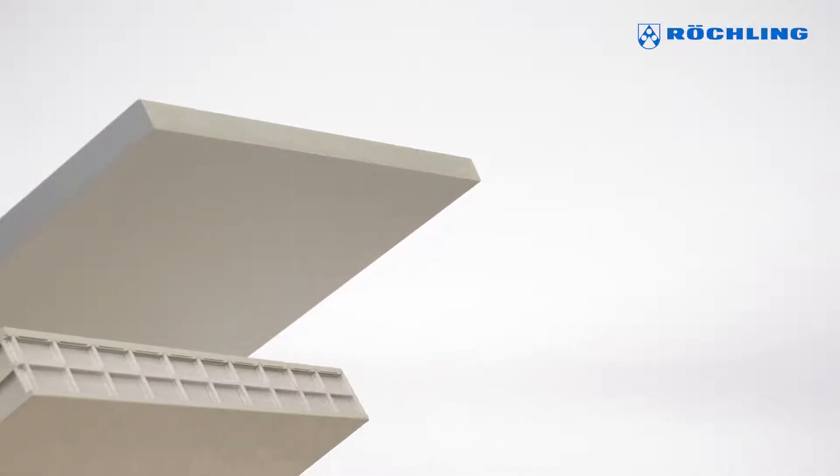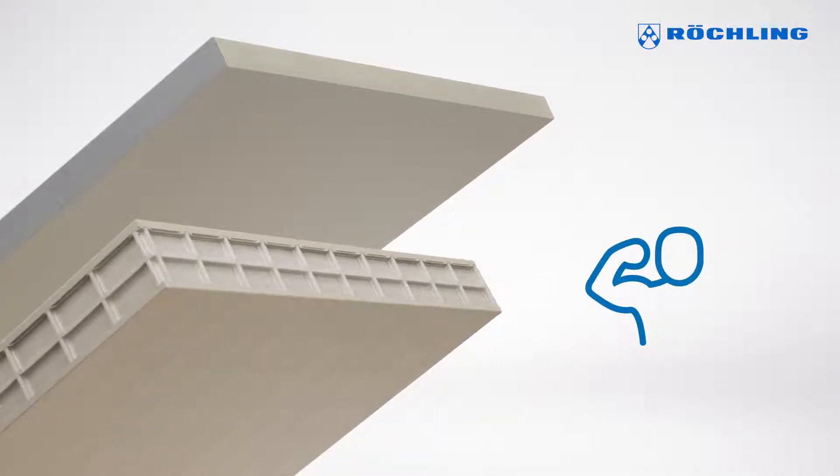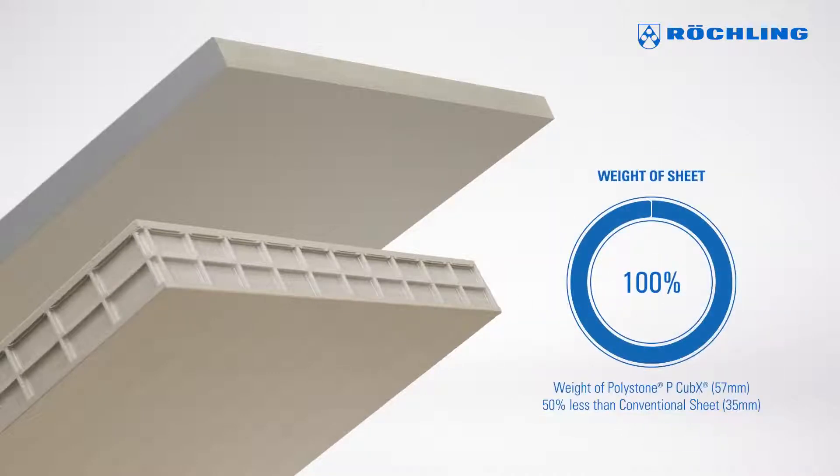The bending rigidity of Polystone P3X is higher than that of a solid plastic sheet made of PP with a strength of 35 mm. But Polystone P3X is only half the weight.